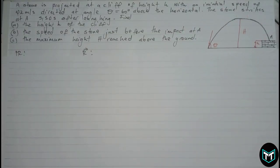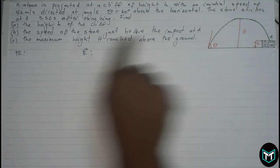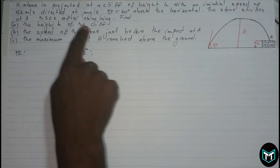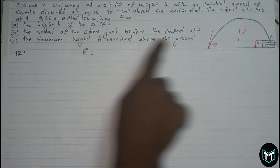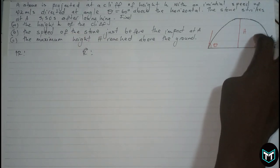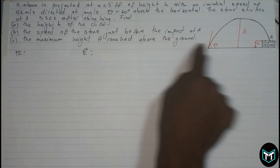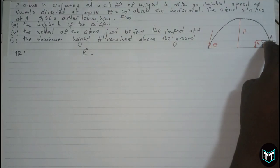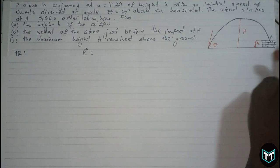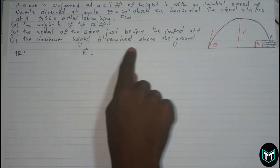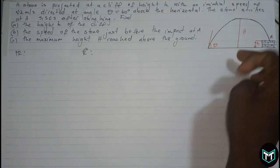Hi guys, welcome back to Think Tank Online Learning. In this video we look at projectile motion. A stone is projected with an initial speed of 42 meters per second directed at an angle theta equals 60 degrees above the horizontal. The stone strikes a cliff 5.5 seconds later after launching. We need to find: the height of the cliff, the speed of the stone just before impact, and the maximum height reached above the ground.